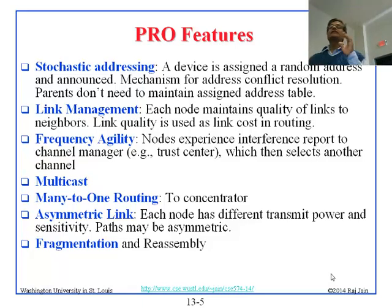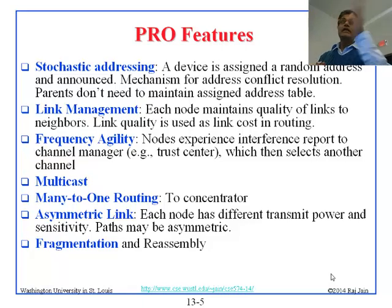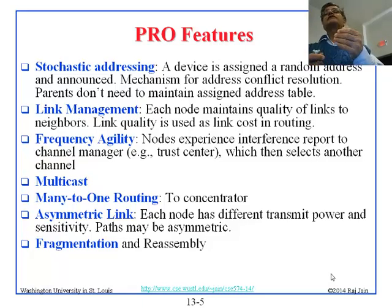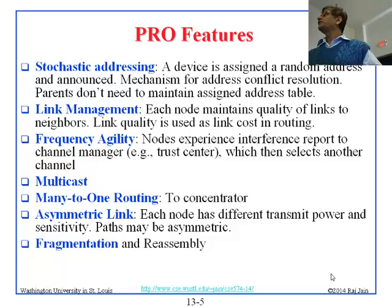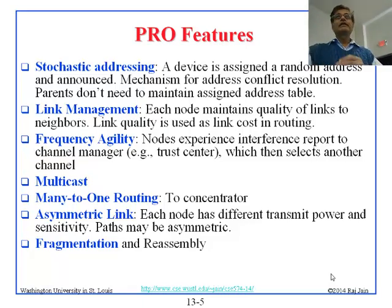There are many features in Zigbee. Some are trivial, but some are new — called Pro features. We will learn that there are many versions of Zigbee; the latest is called Zigbee Pro. First, stochastic addressing. How do you get your 16-bit address? In Bluetooth, who assigns it? The coordinator assigns it.